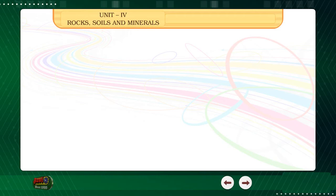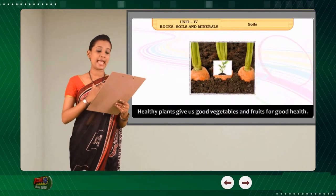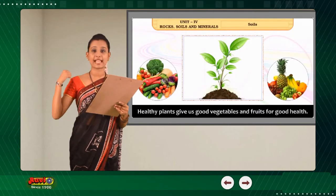Our earth's surface is made up of rocks, water and soil. Soil is very important for the growth of plants. Plants absorb water and mineral salts from the soil through the roots. Soil gives support to the plant. Good soil produces healthy plants. Healthy plants give us good vegetables and fruits for good health.